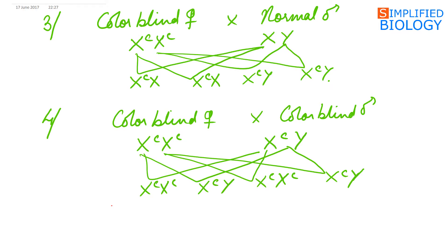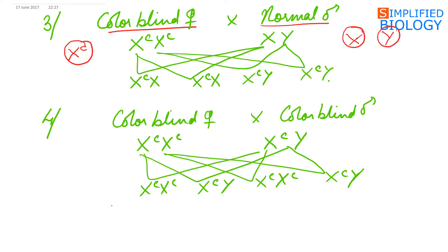In the third cross, a colorblind female marries a normal male. The colorblind female will produce one type of gamete, all having the colorblind gene. The male will produce two types of gametes: one having the normal X chromosome and the other having the Y chromosome. In this case, all the sons are colorblind, while all the daughters are carriers.